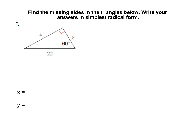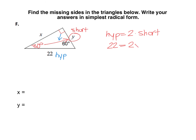For our final example, we're back to a 30-60-90 triangle, and this time I'm giving you the length of the hypotenuse. The hypotenuse is 22, that's the side across from the 90-degree angle. We need to figure out the length of the short side because in a 30-60-90 triangle, everything's based off the short side, which is y here. Recall that the hypotenuse is equal to 2 times the short leg, so 22 has to be equal to 2 times y, and if we divide by 2, we get y equals 11.